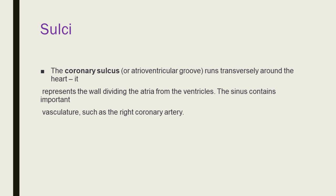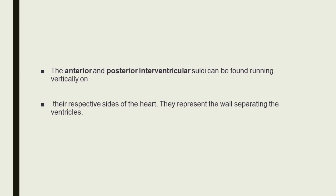The coronary sulcus contains important vasculature such as the right coronary artery. The anterior and posterior interventricular sulci can be found running vertically on the respective sides of the heart, representing the wall separating the ventricles.